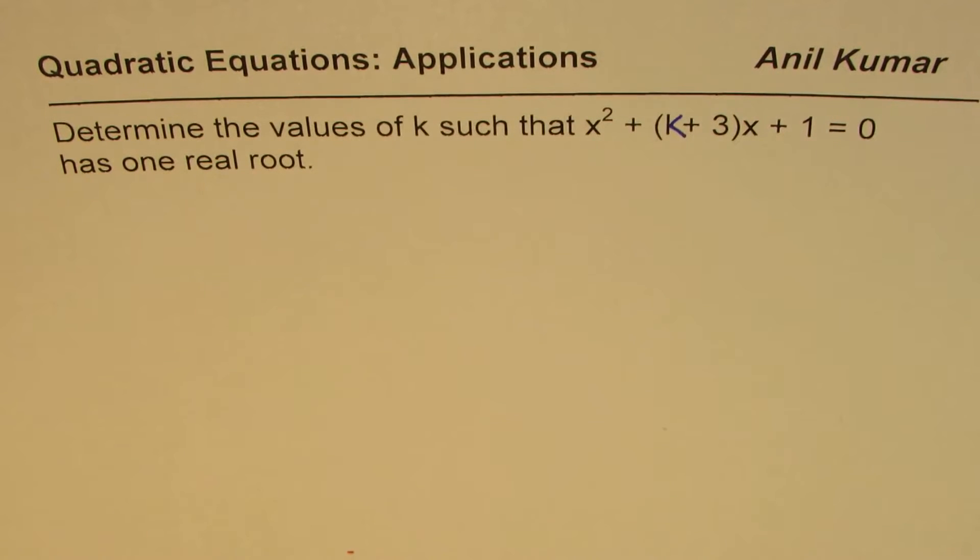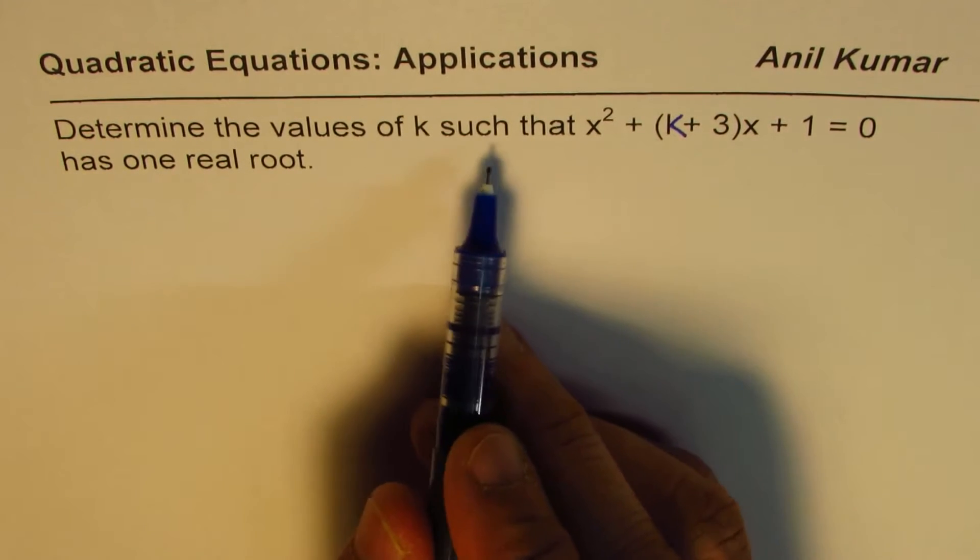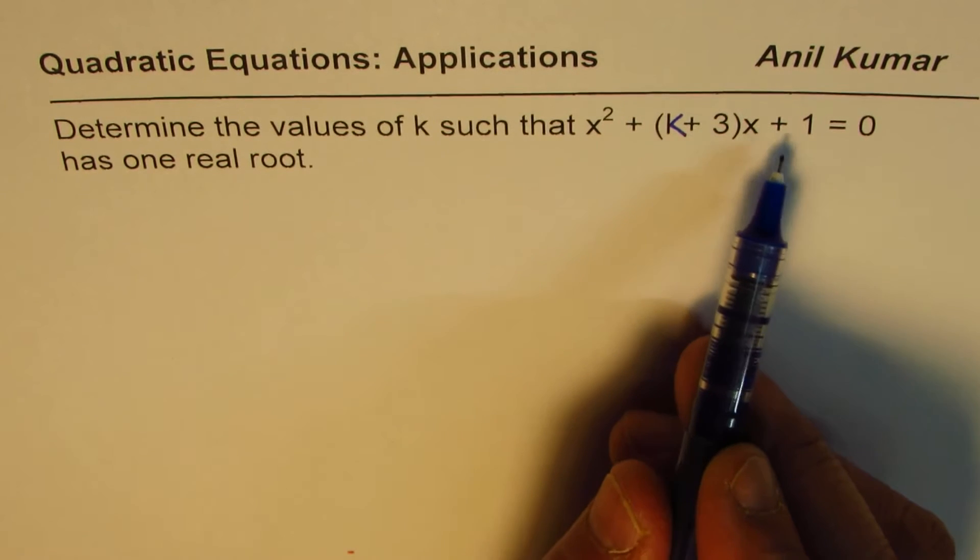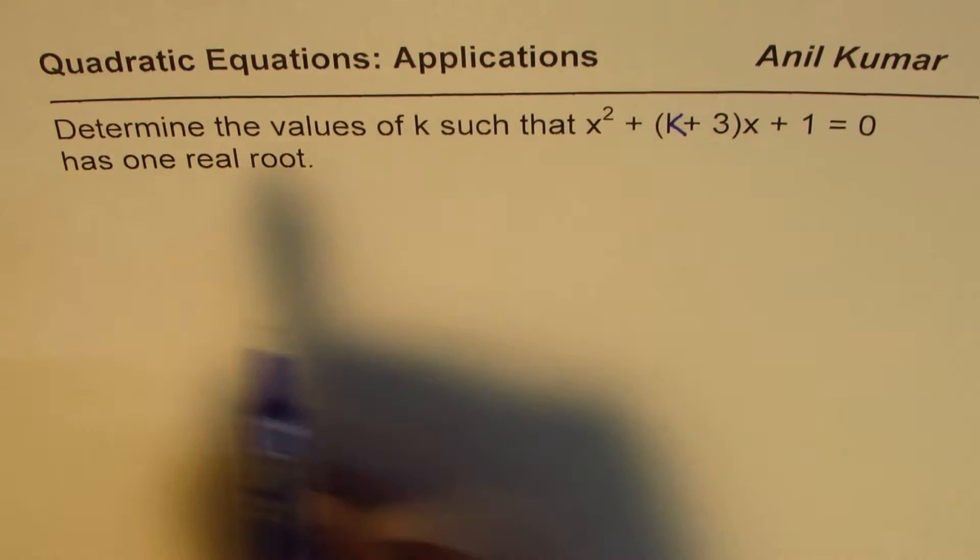I'm Anil Kumar sharing with you questions from a previous test paper. This one is from quadratic equations. The question is: determine the values of k such that x² + (k+3)x + 1 = 0 has one real root.